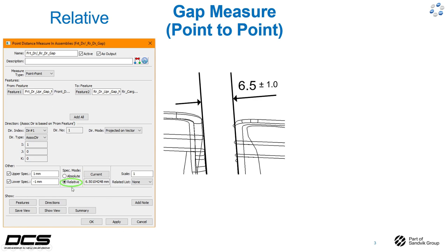Spec mode is going to be checked down here in the lower middle — we're going to select relative. As you can see just to the right of that, our nominal condition is six and a half mils, which looks good. From there all we have to do is enter in the upper and lower spec limits of plus or minus one.